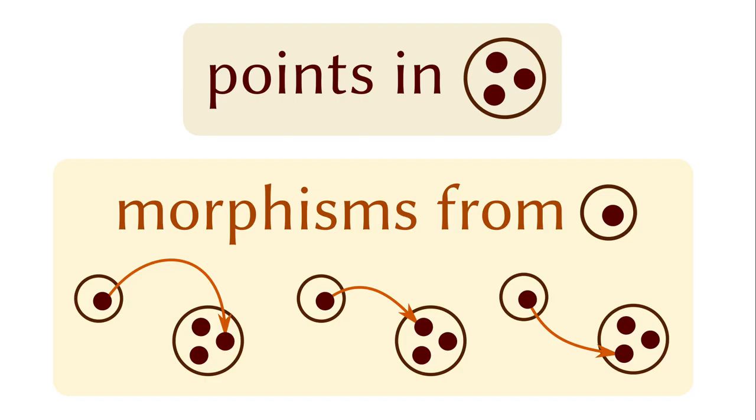For example, an element in a set can be represented by a morphism from a singleton set. There is a one-to-one correspondence between elements in a set and morphisms from a singleton set.